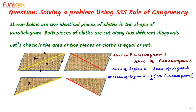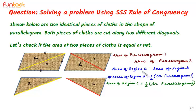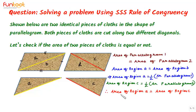Similarly, in the second parallelogram, we can call this triangle as region C and this triangle as region D. As in the first case, area of region C will be equal to half of area of parallelogram 2. In these two equations, the right-hand sides will be the same since area of parallelogram 1 is equal to area of parallelogram 2. So their left-hand sides will also be the same, and we will have area of region A is equal to area of region C. That means these two pieces are equal in area.